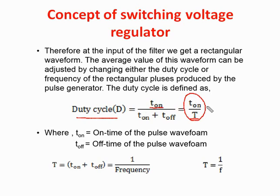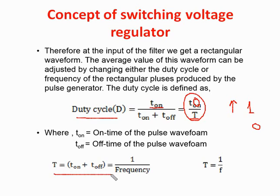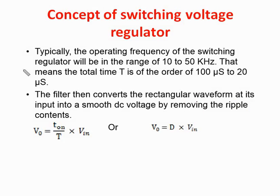T is the total time period, equal to T-on plus T-off, and the time period T equals one over frequency f. The typical operating frequency of a switching voltage regulator is in the range of 10 kHz to 15 kHz, which is a very high value. By increasing the switching frequency, the size of the filter components can be reduced.